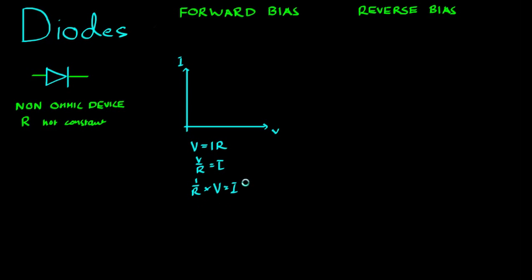So if we were to graph V along the horizontal and I on the vertical as we did here, we expect the gradient of an ohmic device to have a straight line with gradient 1 on R here. But a non-ohmic device does not have to have a straight line because R doesn't have to be constant. The gradient 1 on R also does not have to be constant.